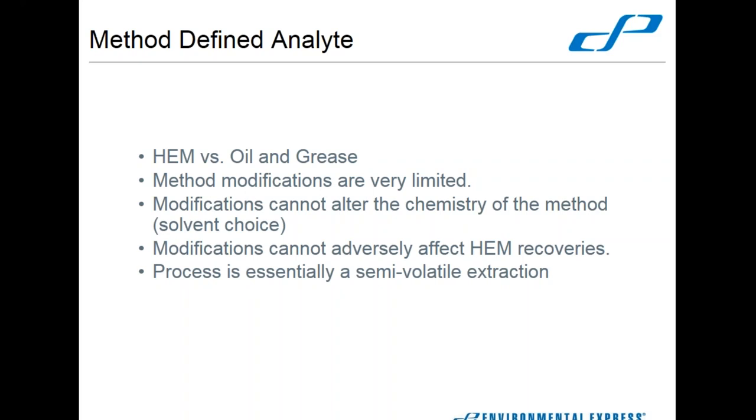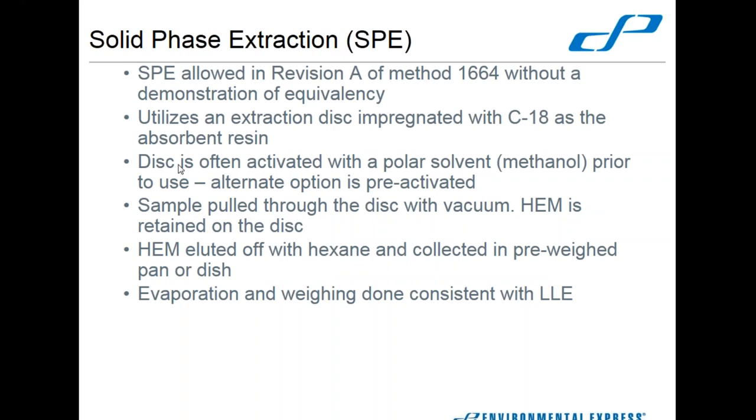Any modifications cannot alter the chemistry of the method, specifically the choice of solvents. You cannot use any other solvent for your elution, and you cannot introduce any other solvents to do what they've defined as a co-solvent elution. Any modifications cannot adversely affect HEM recoveries. This process is essentially a semi-volatile extraction where you're extracting molecules out of an aqueous medium and transferring to a solvent. But instead of advanced analytical instrumentation, you just do gravimetric analysis where you evaporate the hexane off and measure the mass of what has been extracted.